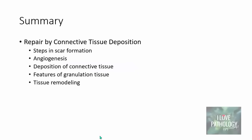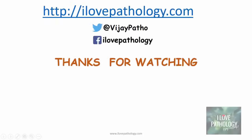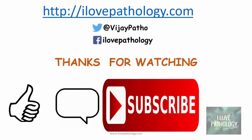In summary, we discussed the second process of repair — repair by connective tissue deposition. We covered the steps in scar formation, angiogenesis, connective tissue deposition, the gross and microscopic features of granulation tissue, and tissue remodeling in detail. Thank you for watching. If you liked this video, please hit the like button, comment, subscribe, and share if you found it interesting and useful.